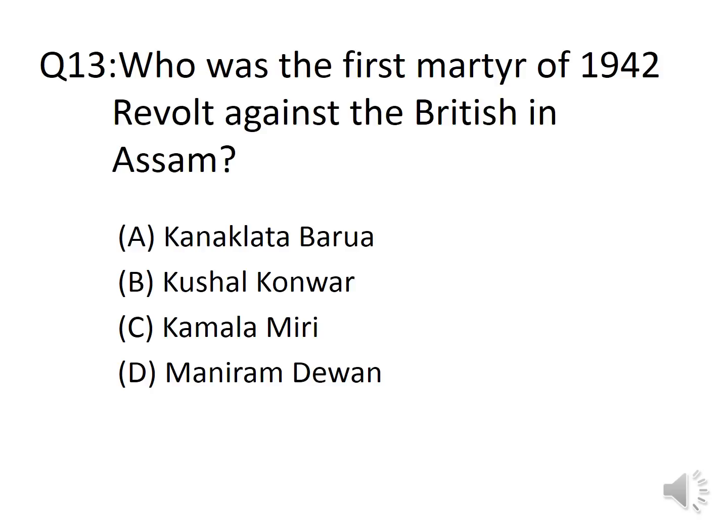Question 13: Who was the first martyr of the 1942 revolt against the British in Assam? Options: A. Kanaklata Barua, B. Kukholgur, C. Kamala Miri, D. Moniram Dewan. The answer is Option A, Kanaklata Barua. Kanaklata Barua was an Indian freedom fighter from Assam who was shot dead while leading a procession bearing the national flag during the Quit India Movement in 1942.